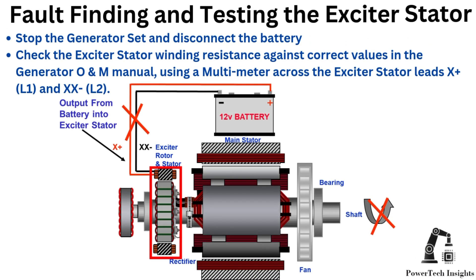Fault finding and testing the exciter stator: Stop the generator set and disconnect the battery. Follow lockout-tagout LOTO procedure. Check the exciter stator winding resistance against correct values in the generator O&M manual, using a multimeter across the exciter stator leads X-plus and XX-negative.